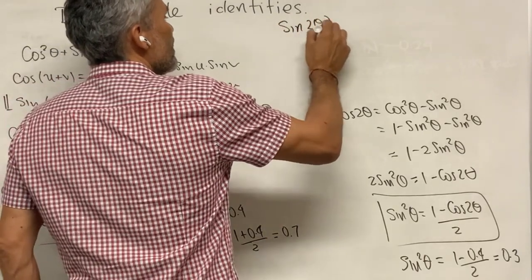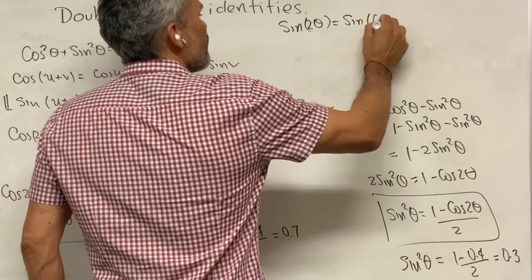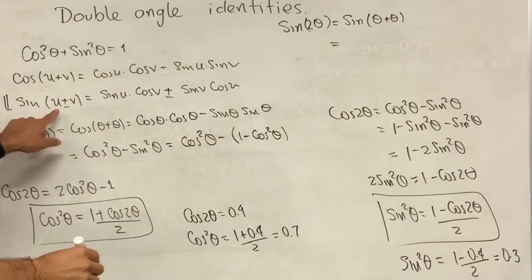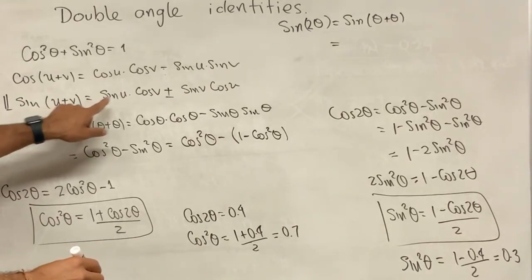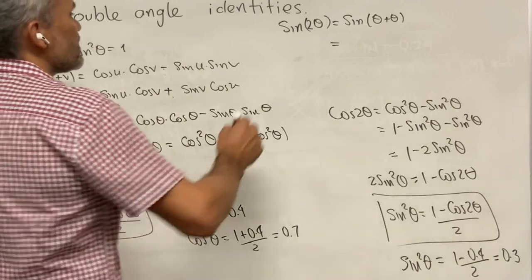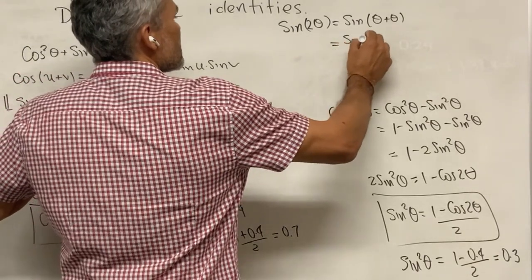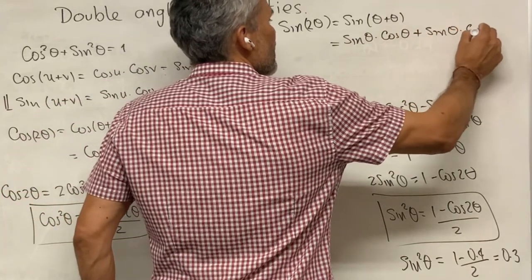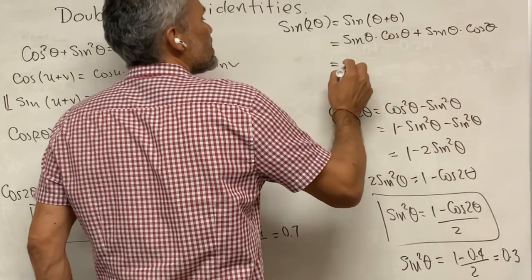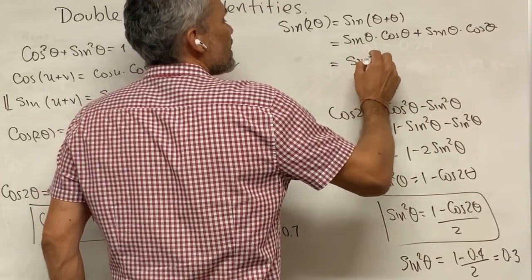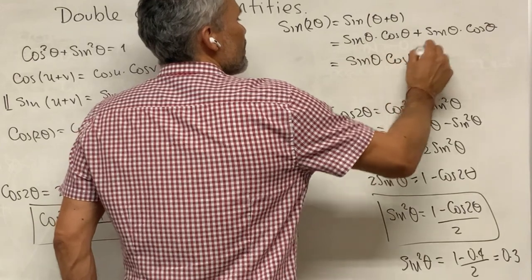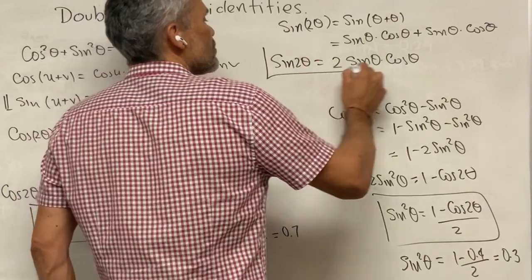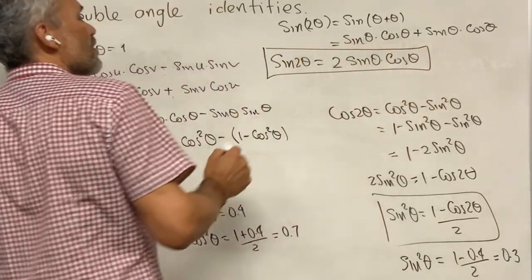Sine of 2 theta is the same as sine of theta plus theta. Using the sine addition formula with u equal to v equal to theta and the plus sign, we get that this is sine of theta times cosine of theta plus sine of theta times cosine of theta. And that means that sine of 2 theta is 2 times sine of theta cosine of theta.